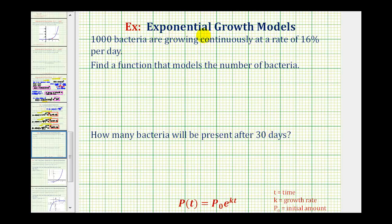Because we're told the bacteria are growing continuously at a rate of 16% per day, we'll be using the continuous exponential growth function given here below, p of t equals p sub zero times e raised to the power of kt.